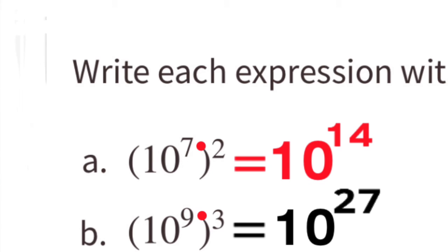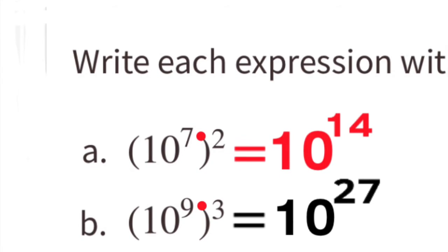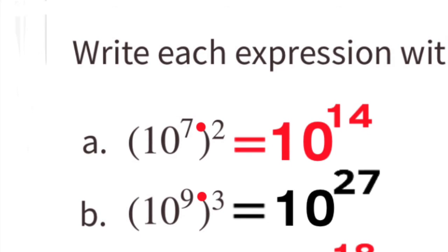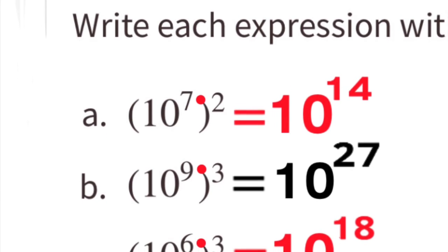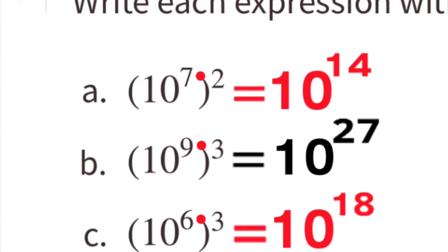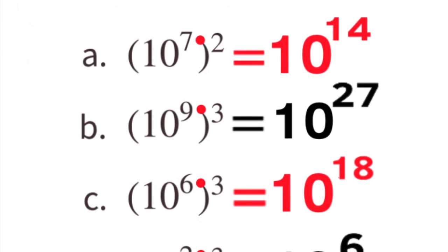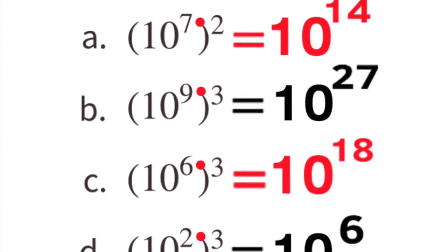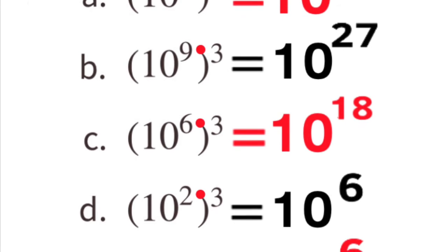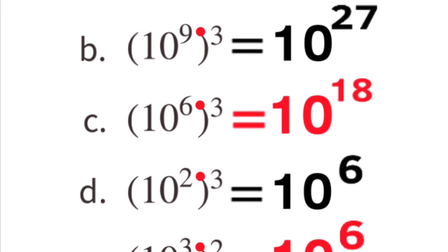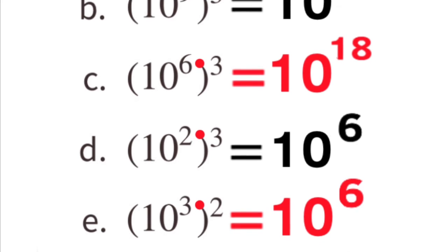Let's go back and use this multiplication strategy on the previous problems. Part A: exponent 7 times exponent 2 equals 10 to the 14th. Part B: exponent 9 times exponent 3 equals 10 to the 27th. Part C: exponent 6 times exponent 3 equals 10 to the 18th. Part D: exponent 2 times exponent 3 equals 10 to the 6th.